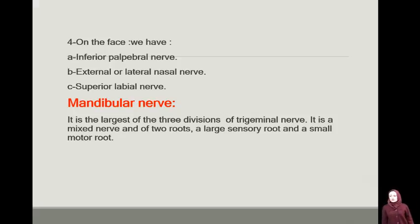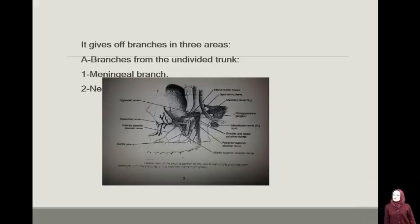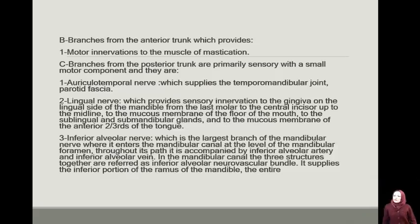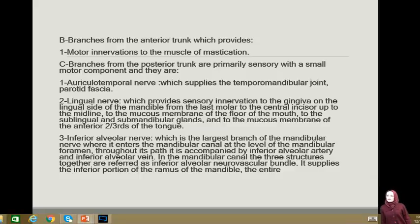The mandibular nerve is the largest of the three divisions of the trigeminal nerve. It is a mixed nerve of two roots — a large sensory root and a small motor root. It gives off branches in these areas: branches from the undivided trunk, A) meningeal branch; branches from the anterior trunk, which provide motor innervations to the muscles of mastication; branches from the posterior trunk, which are primarily sensory with a small motor component.